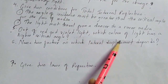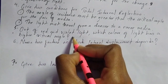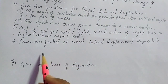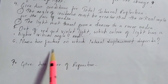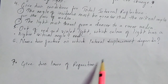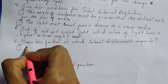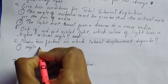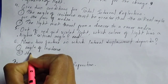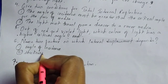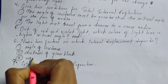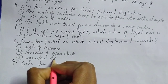Question number 5: out of red light and violet light, which colour of light has a higher critical angle? The answer is red light — it has the higher critical angle, while violet light has the least critical angle. Question number 6: name two factors on which lateral displacement depends. The first factor is the angle of incidence, and the second is the thickness of the glass block or glass slab. You can also write refractive index, as lateral displacement depends on that too — any two of these factors are acceptable.